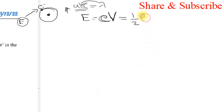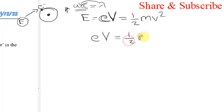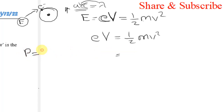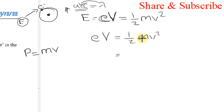Kinetic energy is nothing but ½mv². So we write eV = ½mv². Now we rearrange the terms, because we know that momentum p = mv. We multiply and divide by m to obtain m²v² divided by 2m.